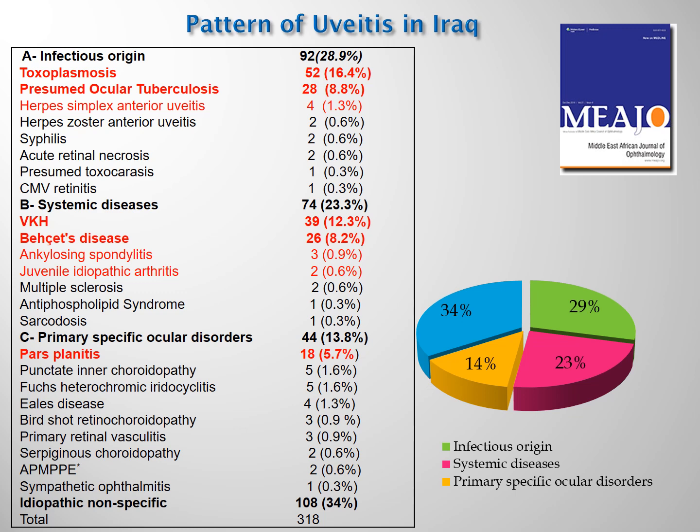According to a previous study published in the Middle East African Journal of Ophthalmology, the most common causes of infectious uveitis in our community are toxoplasmosis, presumed TB uveitis, followed by herpes simplex anterior uveitis. The most common causes of non-infectious systemic uveitis are VKH, Behçet disease, ankylosing spondylitis, and juvenile idiopathic arthritis. The most common specific ocular uveitides are pars planitis, followed by Fuchs uveitis cyclitis, and white dot syndrome.